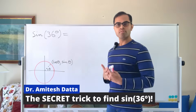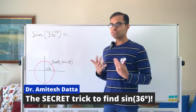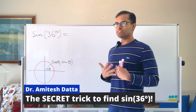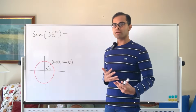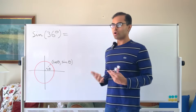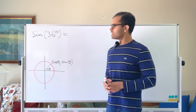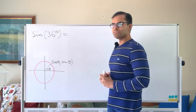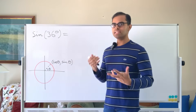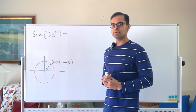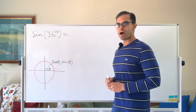Sine 36 is an odd value of sine. It's weird. It's not 0, 30, 45, 60, or 90, and it's not clear how to use any of the identities to find it out, but I'm going to show you how.